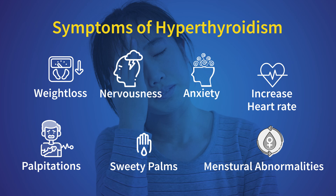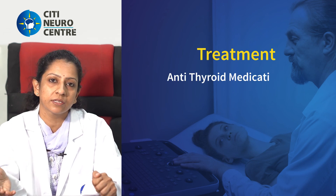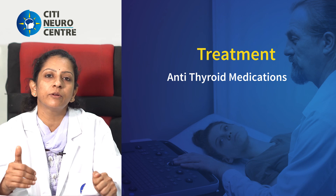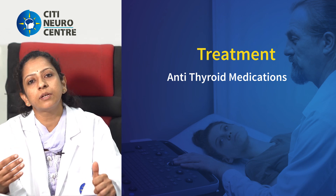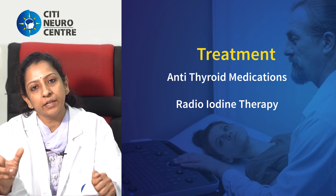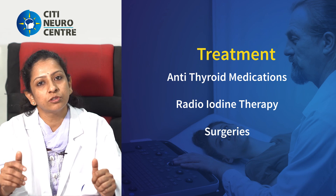If it is hypothyroidism and it is because of iodine deficiency, we supplement with thyroid hormones in the form of a tablet. If it is hyperthyroidism, we start with a medical line of management — antithyroid medications which help control thyroid hormone production — or we do something called radioiodine therapy to decrease the production of hormones. Another option is also surgery.